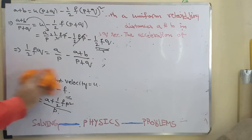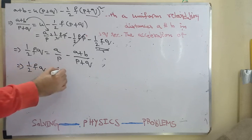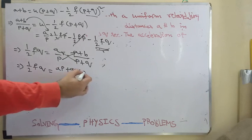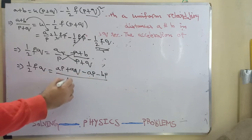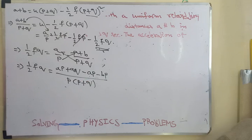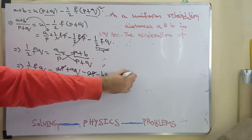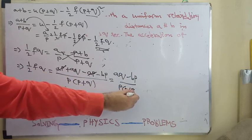Just have to pick up the LCM and transport the Q by 2 onto the other side. Half F Q is equal to A P plus A Q. We can do minus A P minus B P. A P gets cancelled.